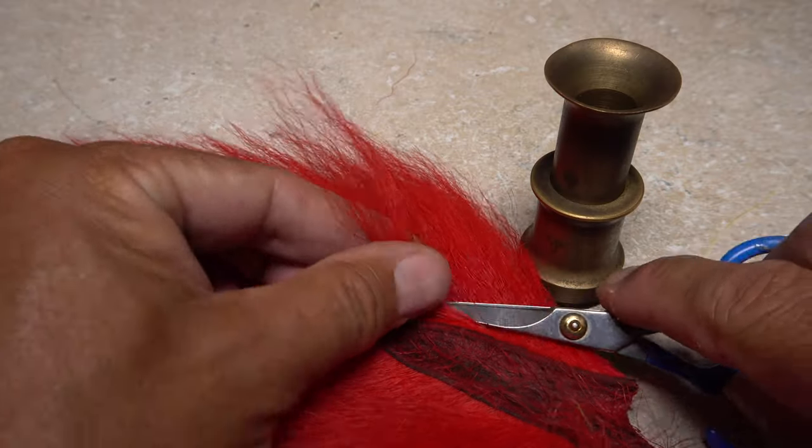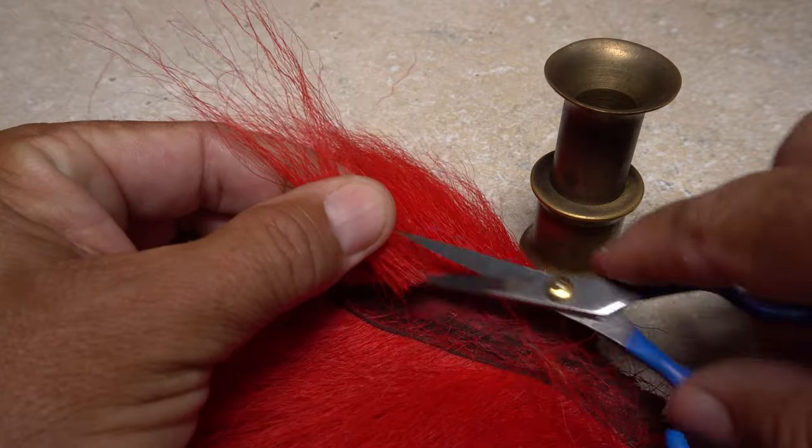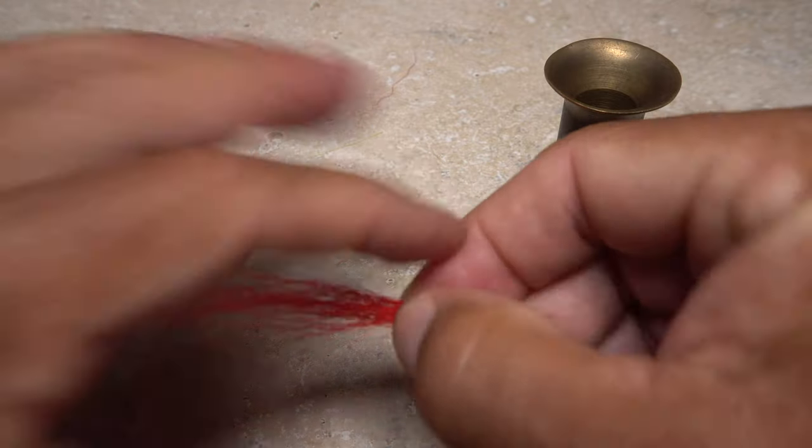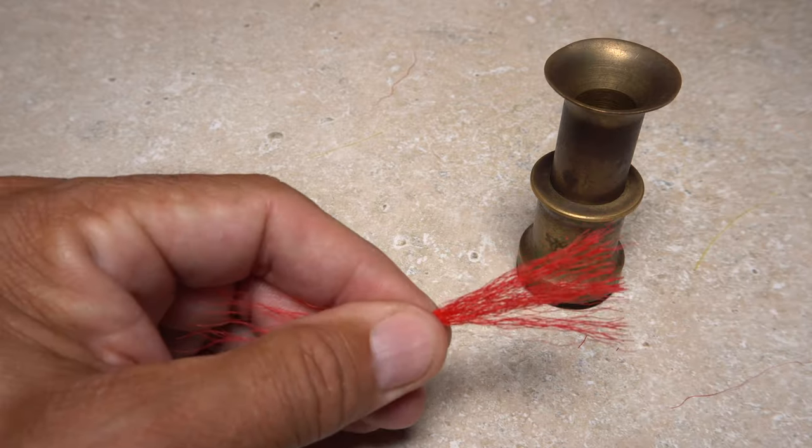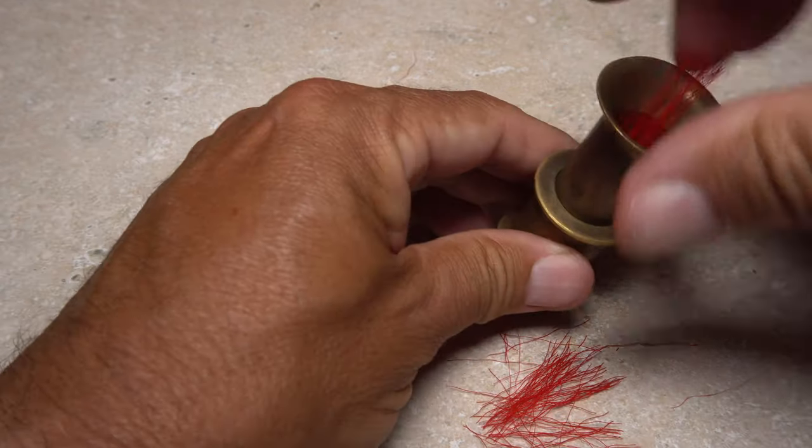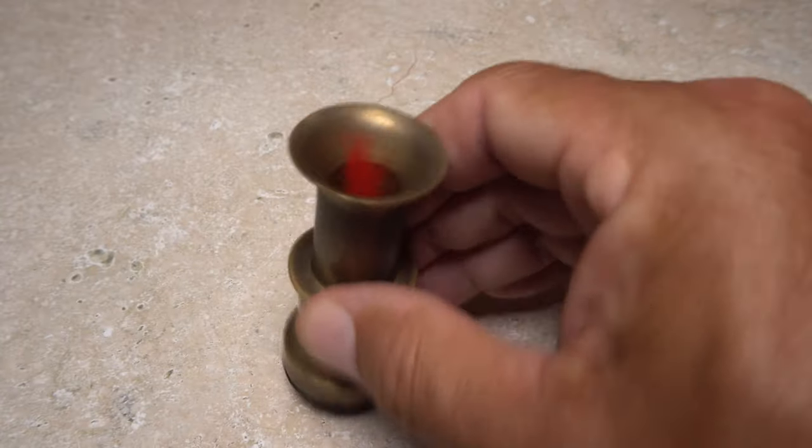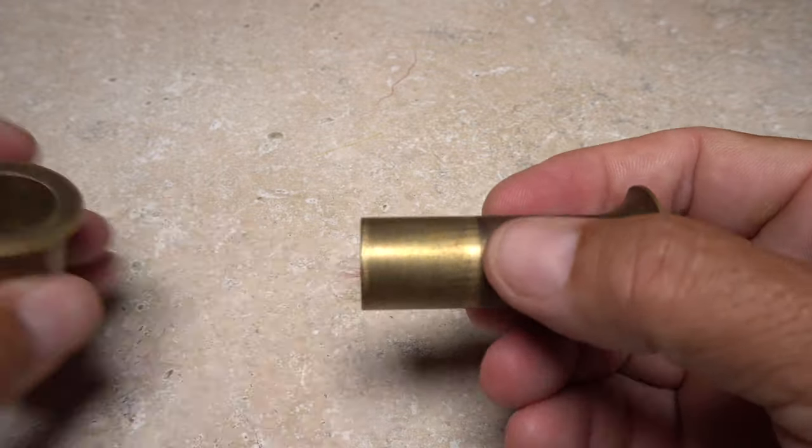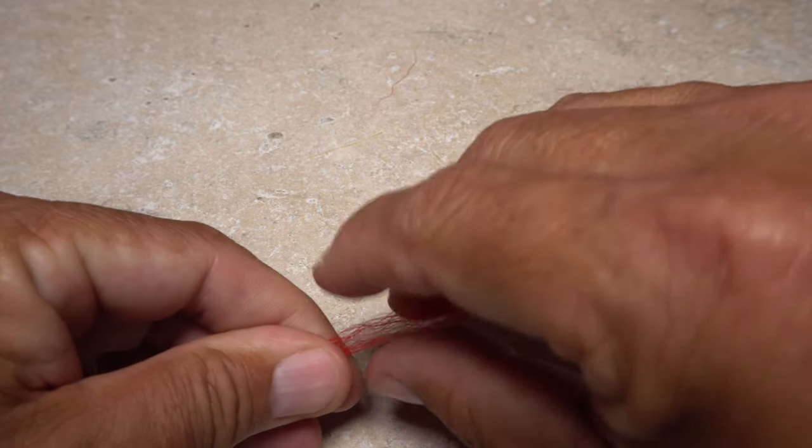Now it's time for a thin layer of red bucktail. Again, snip a sparse clump free from the hide, clean out the lower short hairs and longer tips, then snip an inch or so of the butts off square. Place the clump tips first into your stacker, give it a good stacking, then get hold of the hair tips as you did before.